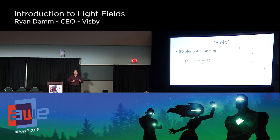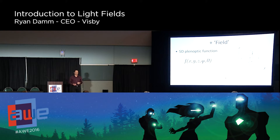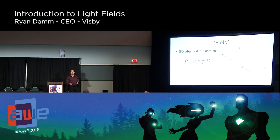If you want to describe the light in a large space, you actually have to use five dimensions: a single spot in space is three dimensions — X, Y, Z — then you have to specify the direction of the ray of light, which is two more dimensions, like latitude and longitude. So it's a five-dimensional function. However, it turns out that this is a little bit overdetermined, and you can actually collapse the five-dimensional function down into a four-dimensional surface.